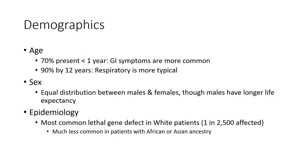Demographic age: GI symptoms are more common up to age 7, and by age 12, ninety percent of patients show respiratory symptoms more typically. There is equal sex distribution between male and female, though males have longer life expectancy. Epidemiology: cystic fibrosis is the most common lethal genetic disease in white patients, affecting one in 25,000. It is much less common in patients with African or Asian ancestry.